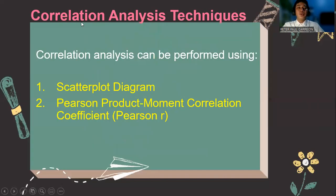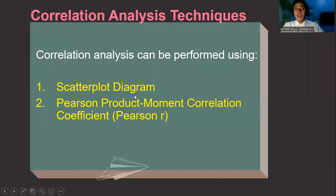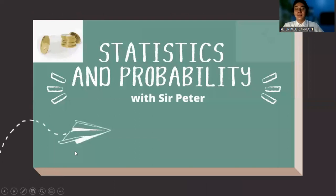When we talk about correlation analysis techniques, there are two ways to perform it. First is graphically. We can represent it by the use of the scatterplot diagram or scatter diagram. And number two, we can actually solve for the Pearson product moment correlation coefficient, which is also known as Pearson R. All of this will be discussed in the next video lesson. So again, this is Sir Peter, your statistics and probability teacher.